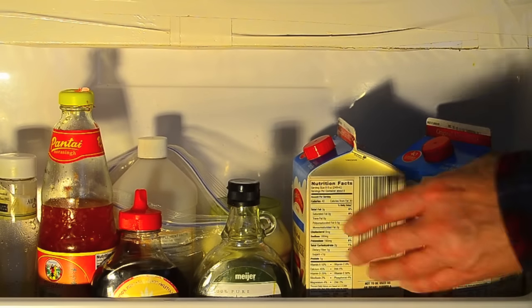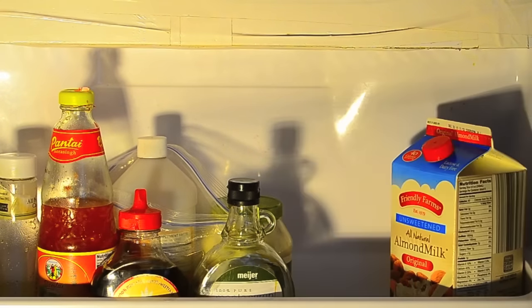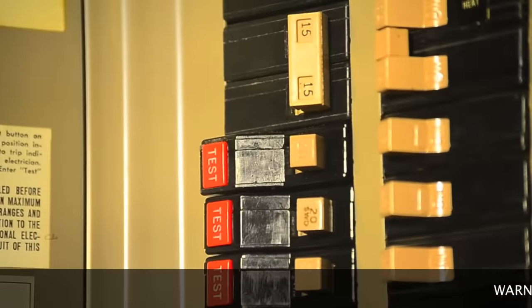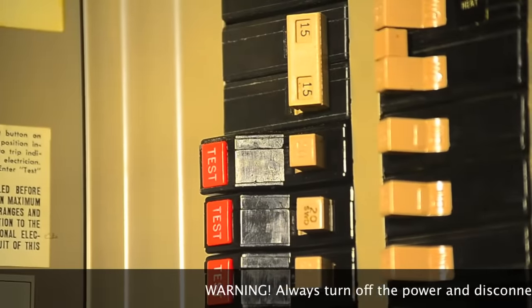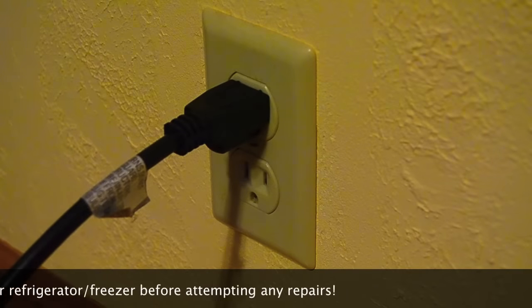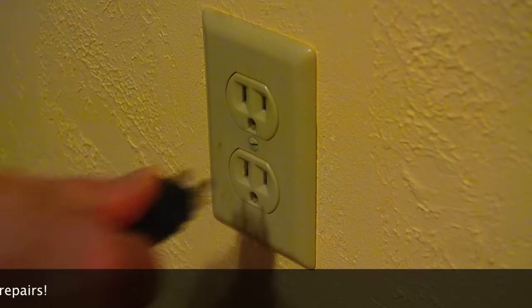Empty your refrigerator and freezer and move the items to a working refrigerator and freezer. Turn off the circuit breaker or remove the fuse to your unit. Pull out the unit and unplug it. Make sure the unit is unplugged.